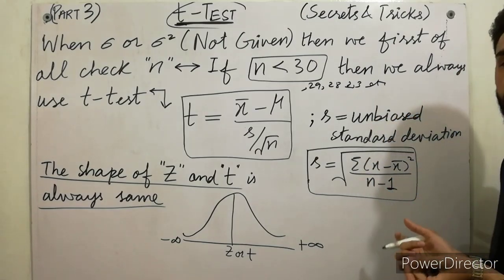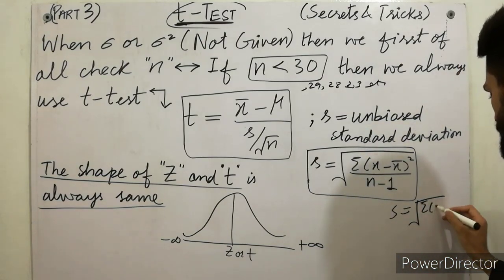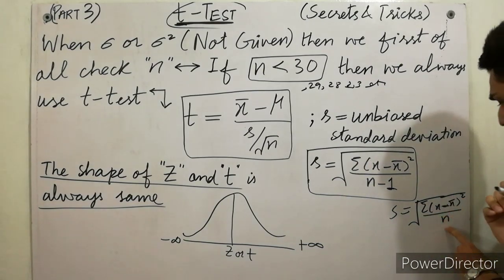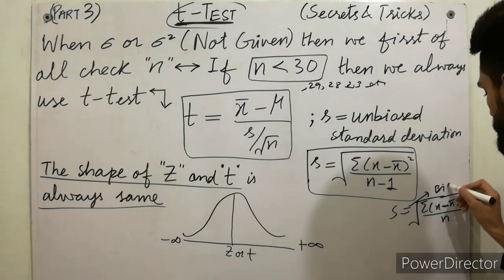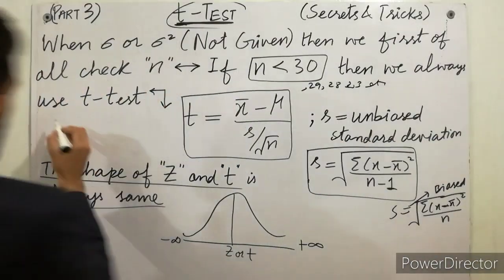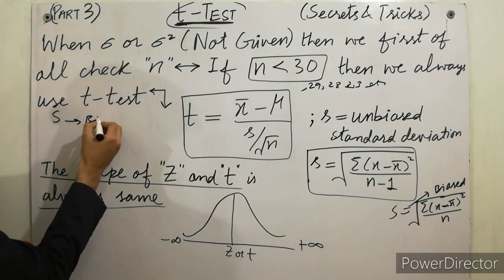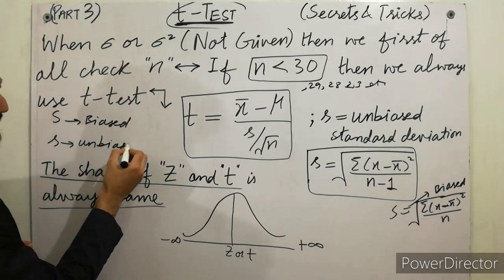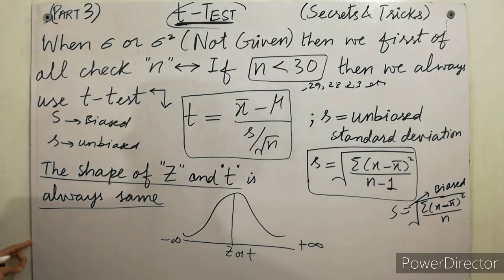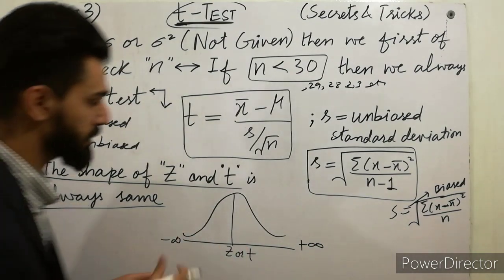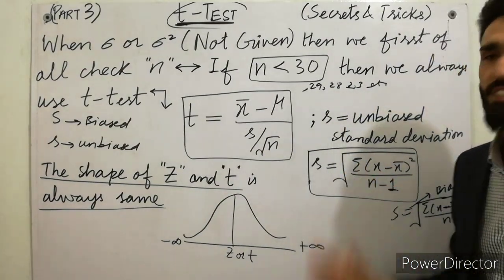Must remember: S (biased) uses formula with n in the denominator, and S̃ (unbiased) uses n − 1. The shape of Z and T distributions is always the same — bell shape — with the same range of approximately −∞ to +∞.